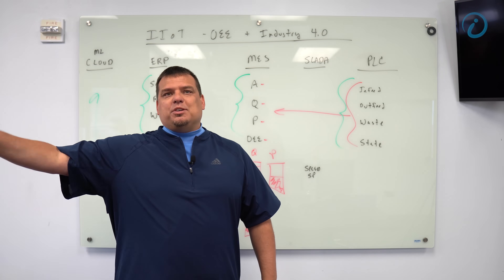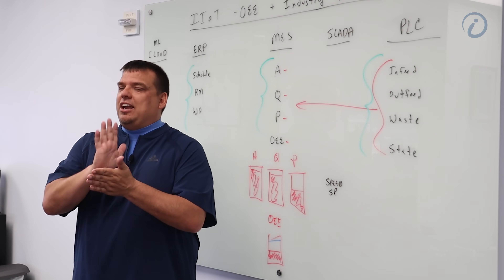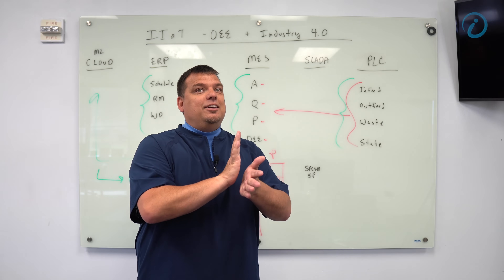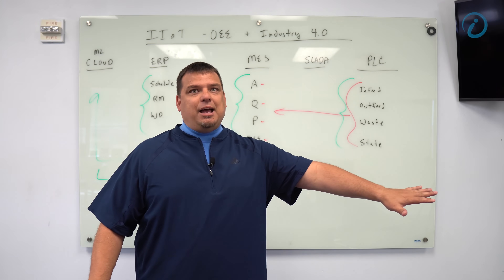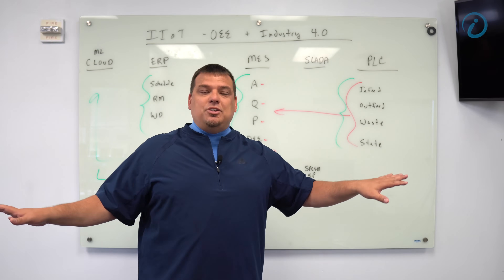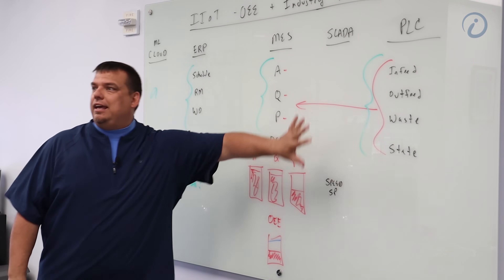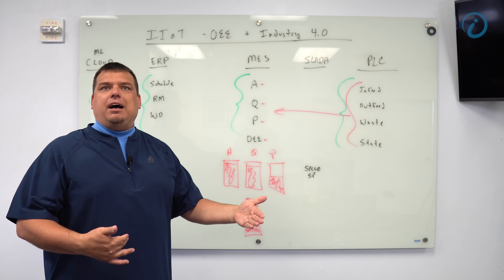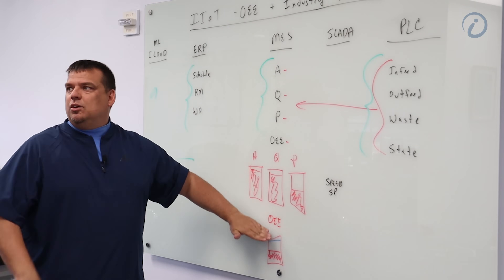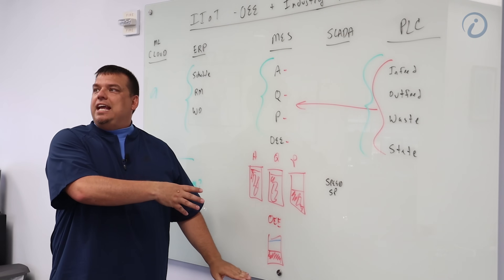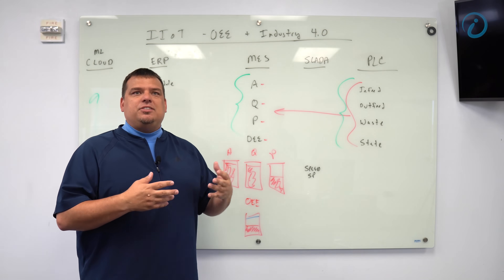Rockwell ultimately identified that they had been resting on their laurels and were not positioned to capitalize on the change in the market. The simple reality is that if you're still doing it the Industry 3.0 way three to five years from now and don't have a digital transformation strategy in place, you can just be written off. If you don't have a mechanism for capturing these efficiency gains, which you will get just by providing visibility to these numbers, you will not be able to compete.